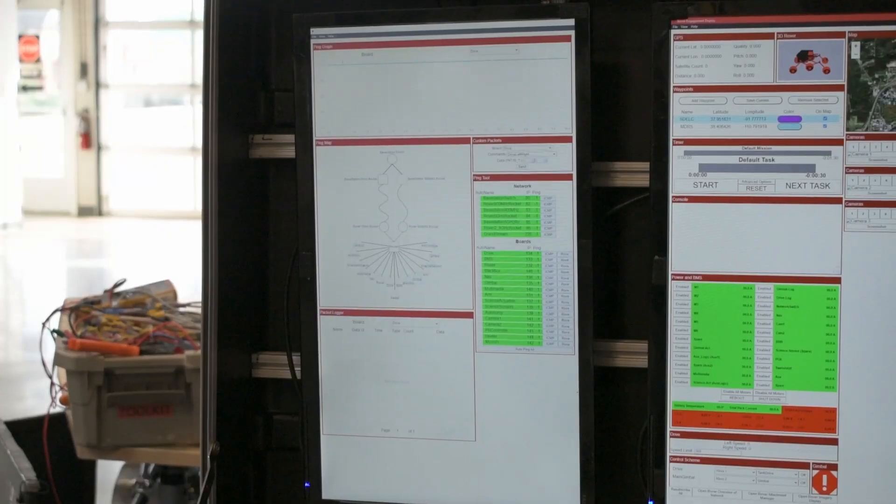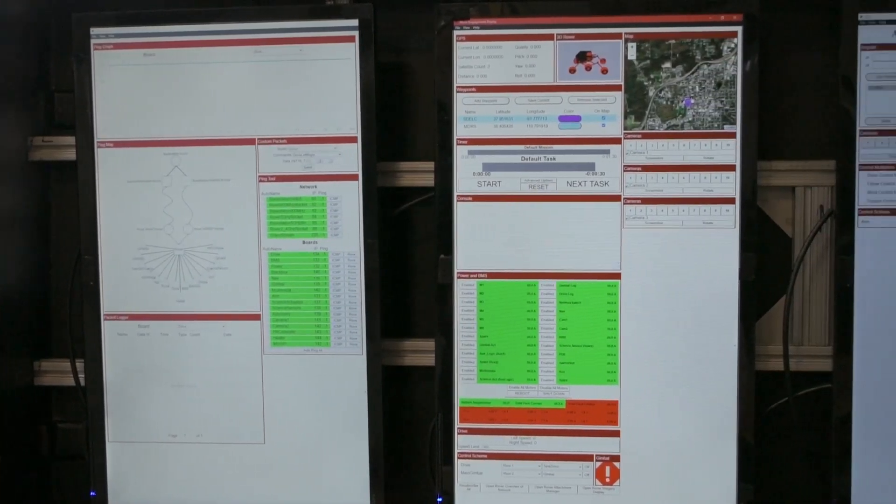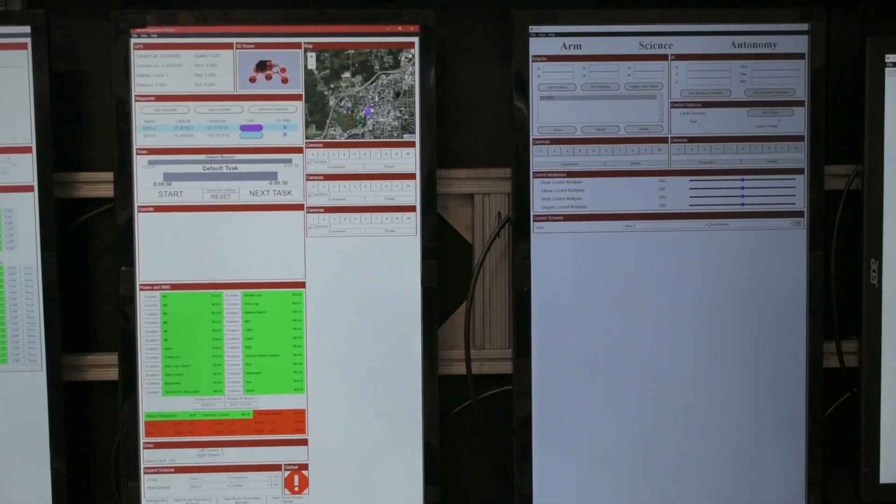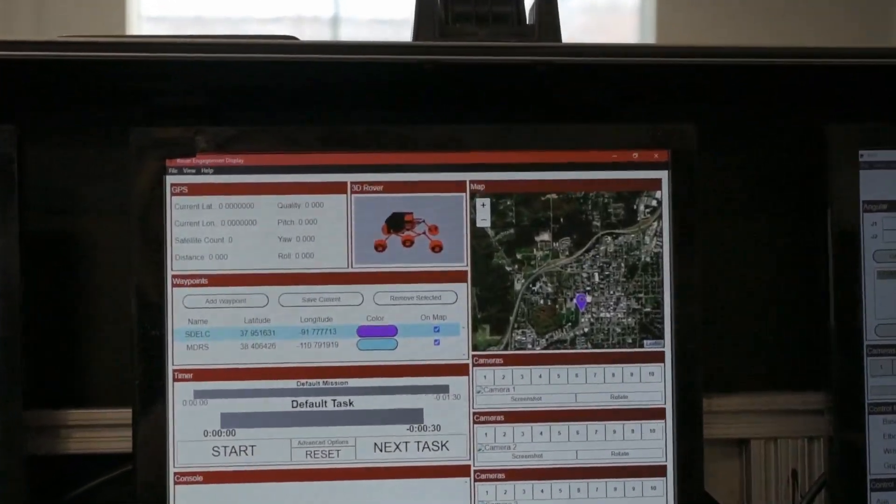To interact with the rover, MRDT has written a custom GUI application in which operators are able to see and easily switch between camera views, monitor the rover's location on a map, and view diagnostic data sent from the rover.